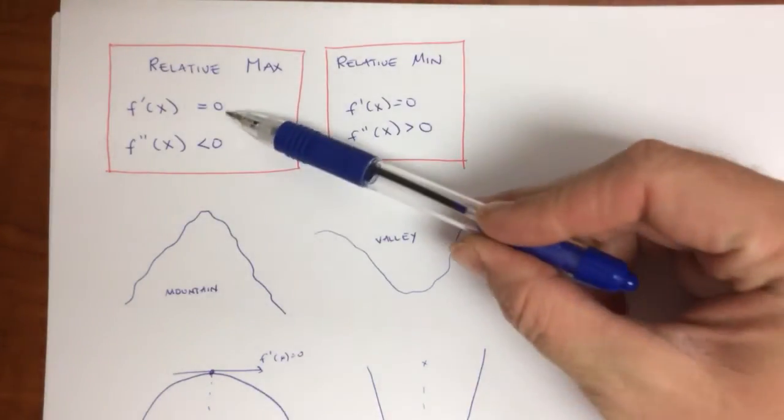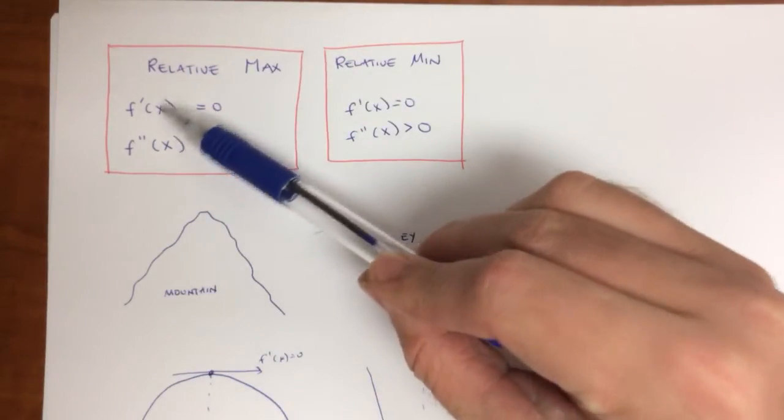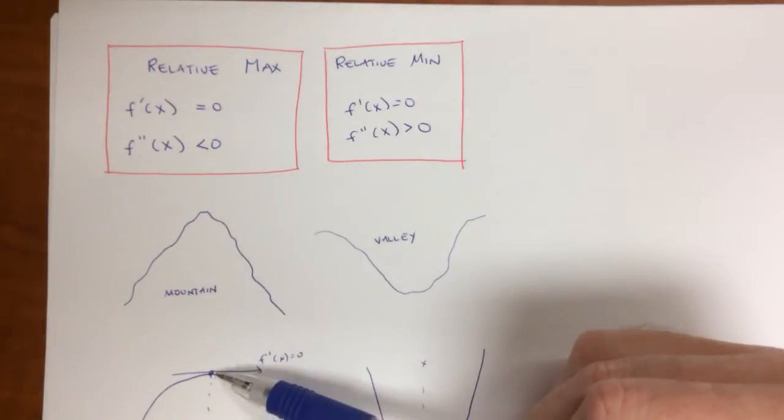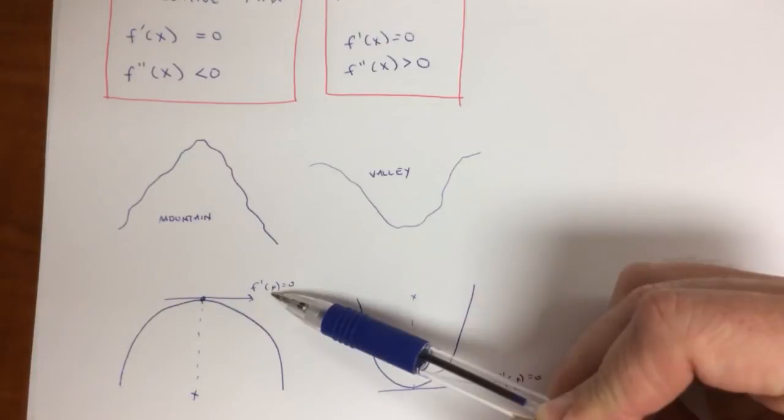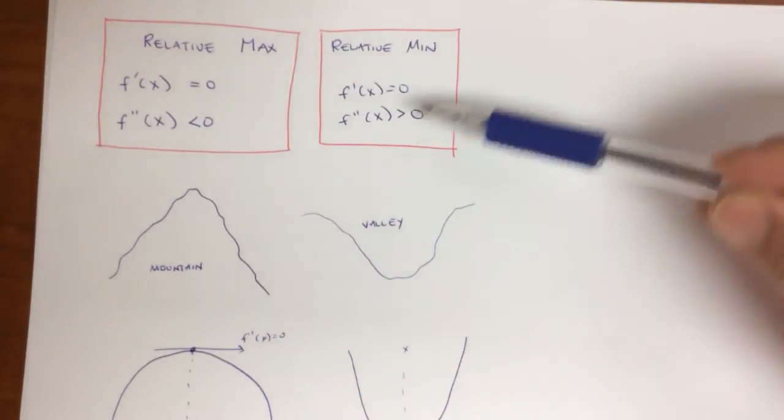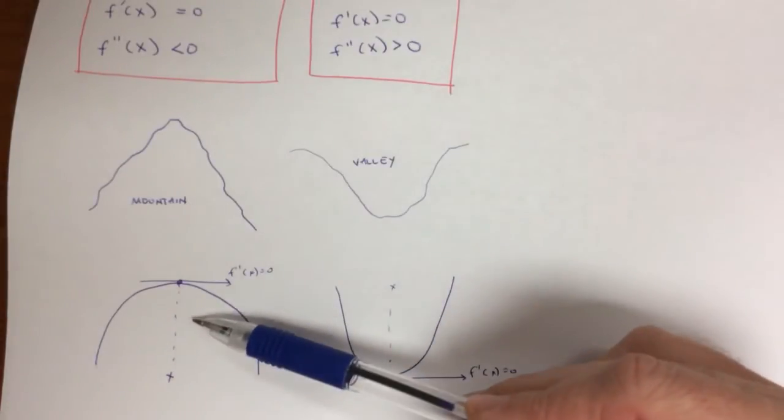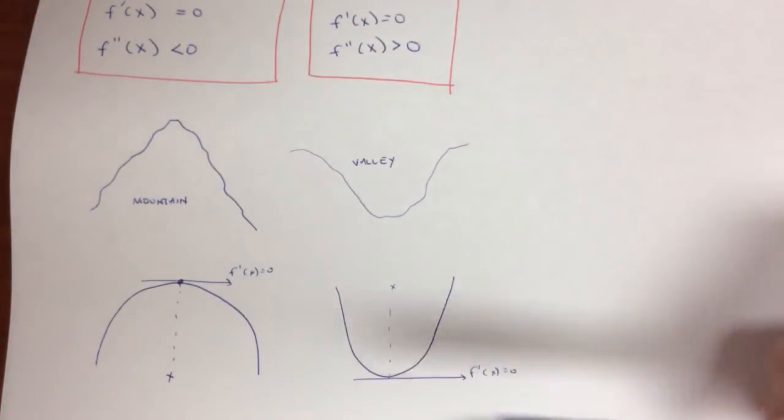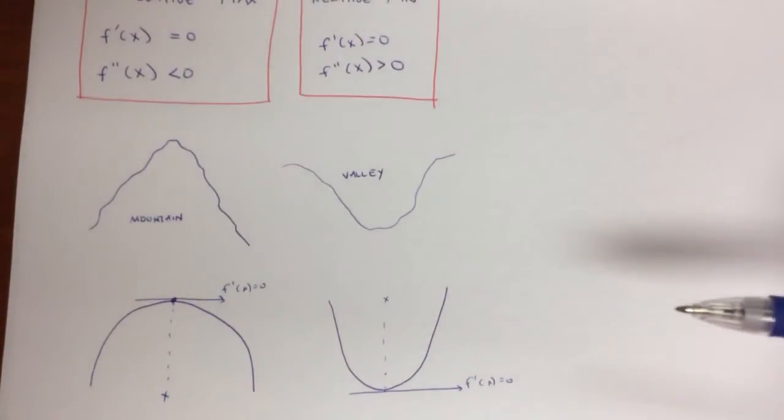The two conditions to find a relative max. First condition, we set the first derivative equal to zero. That tells us this point right here. This x value such that that first derivative is zero. But you'll notice that's also the first condition of a relative min. Both functions have a first derivative equal to zero at the top and the bottom. Because there ain't no mountain high and ain't no valley low enough that we can't find a first derivative.